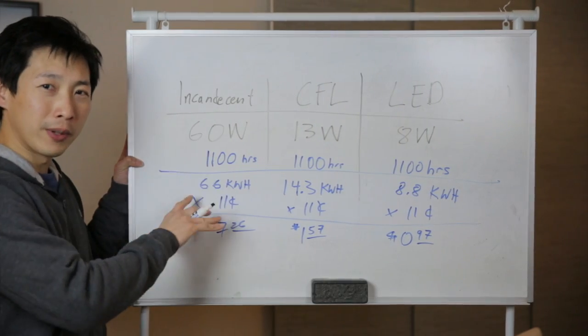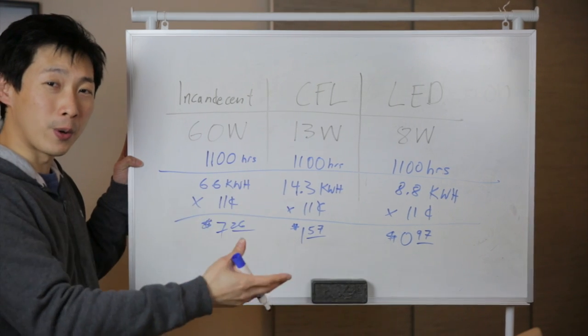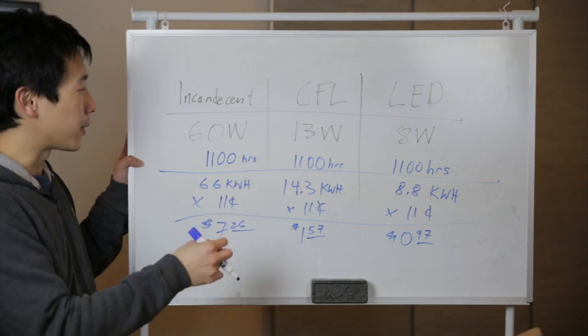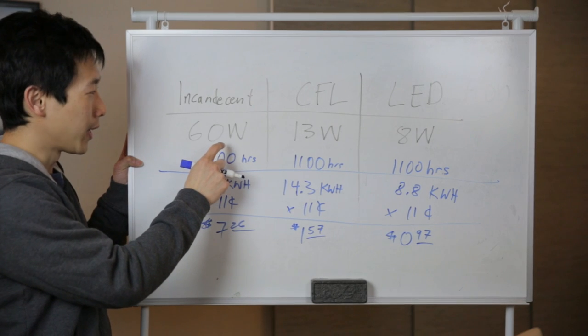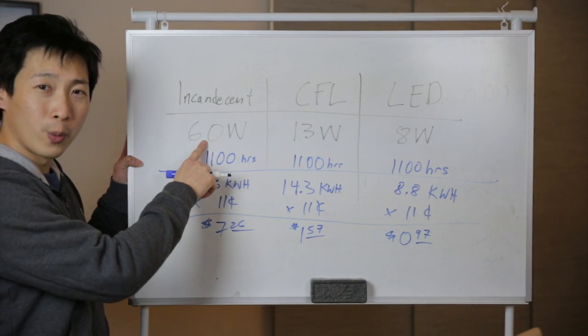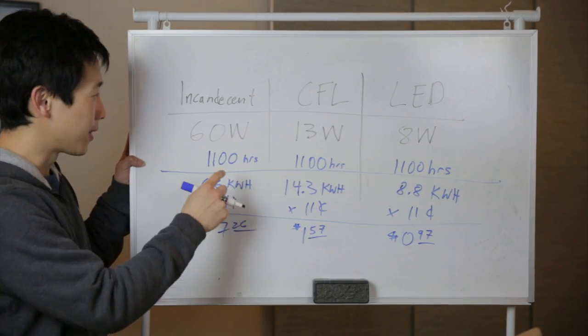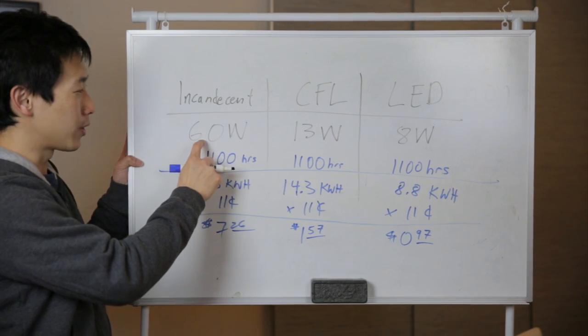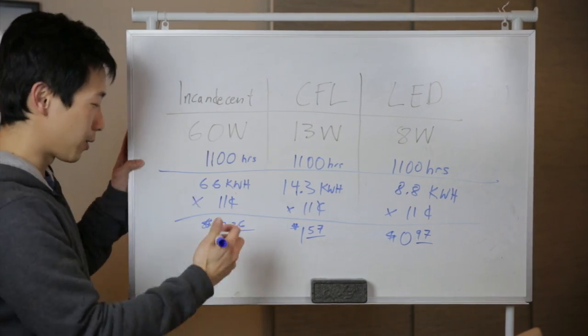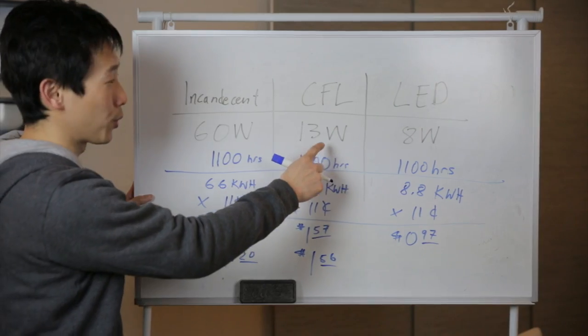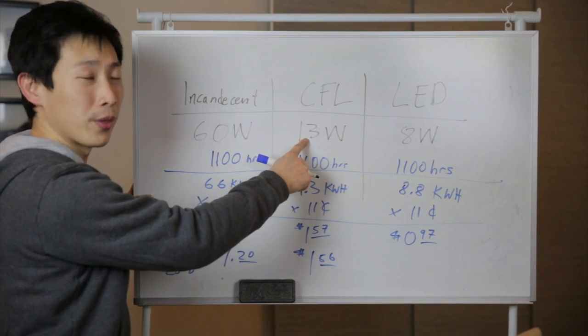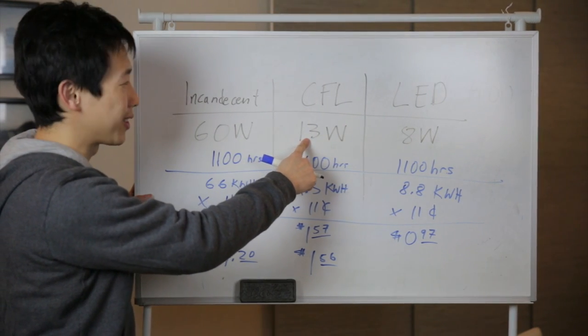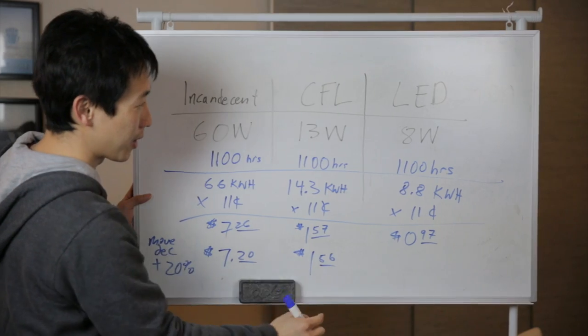So this is a bit complicated to do every single time when you go out shopping without a pen and paper. So you can just look at the wattage of the thing itself, and move the decimal place over 1, and add 20%. So a 60 watt is $6 plus $1.20, so that's $7.20. And for 13 watts, move the decimal over, $1.30 plus 26 cents, $1.56, so there it is.